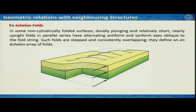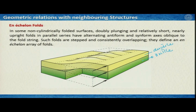En-echelon folds can form when you have a ductile layer on top and a strong brittle layer below. If a strike-slip fault causes one block to slip past the other, it drags the top ductile layer and when that happens a series of folds forms in an array — these folds together are known as en-echelon folds.